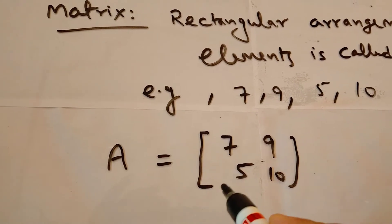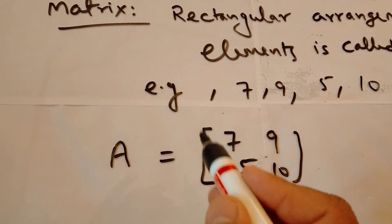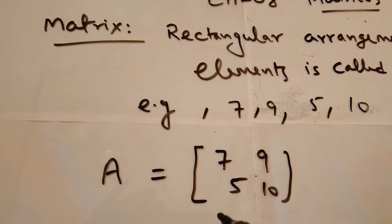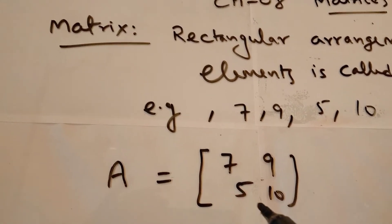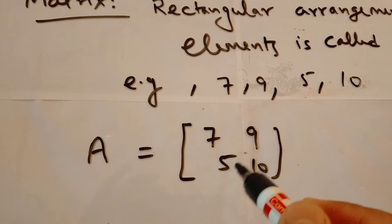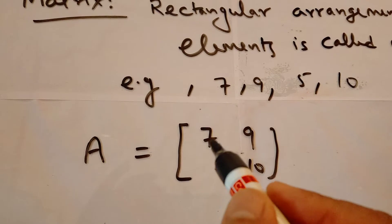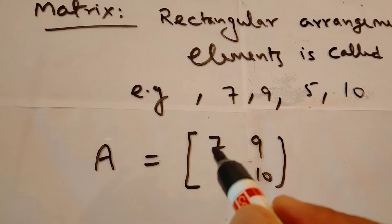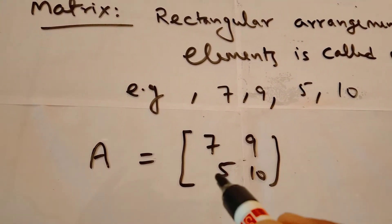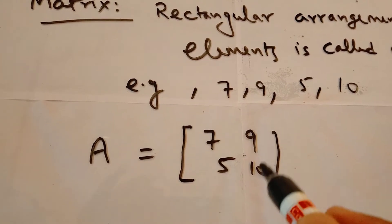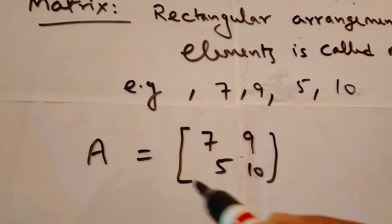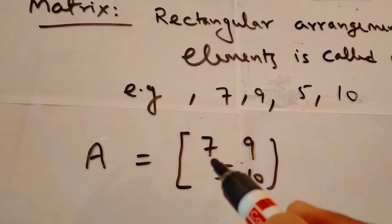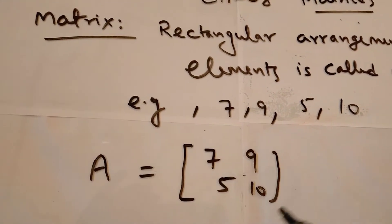You have to draw this rectangular bracket — this is the symbol of a matrix arrangement. It is just like your classroom. Suppose we have four students in a classroom: roll number one, roll number two, roll number three, roll number four. This arrangement of four students in a class is called a matrix.